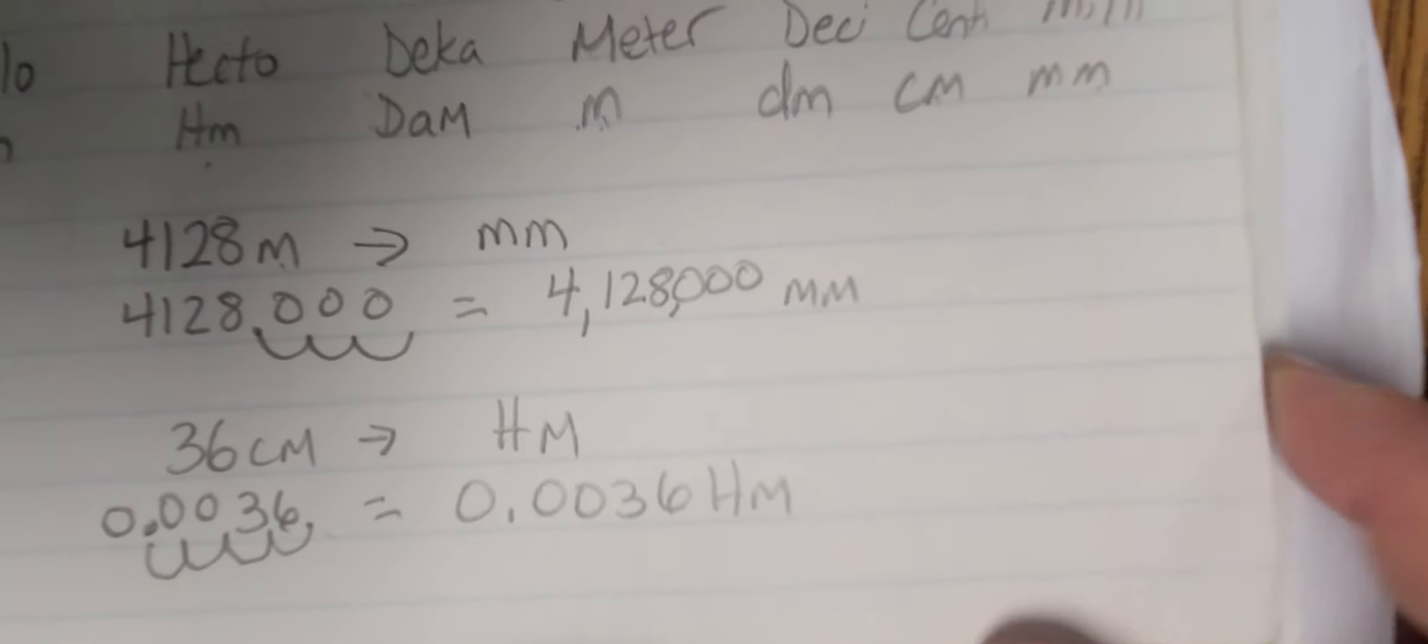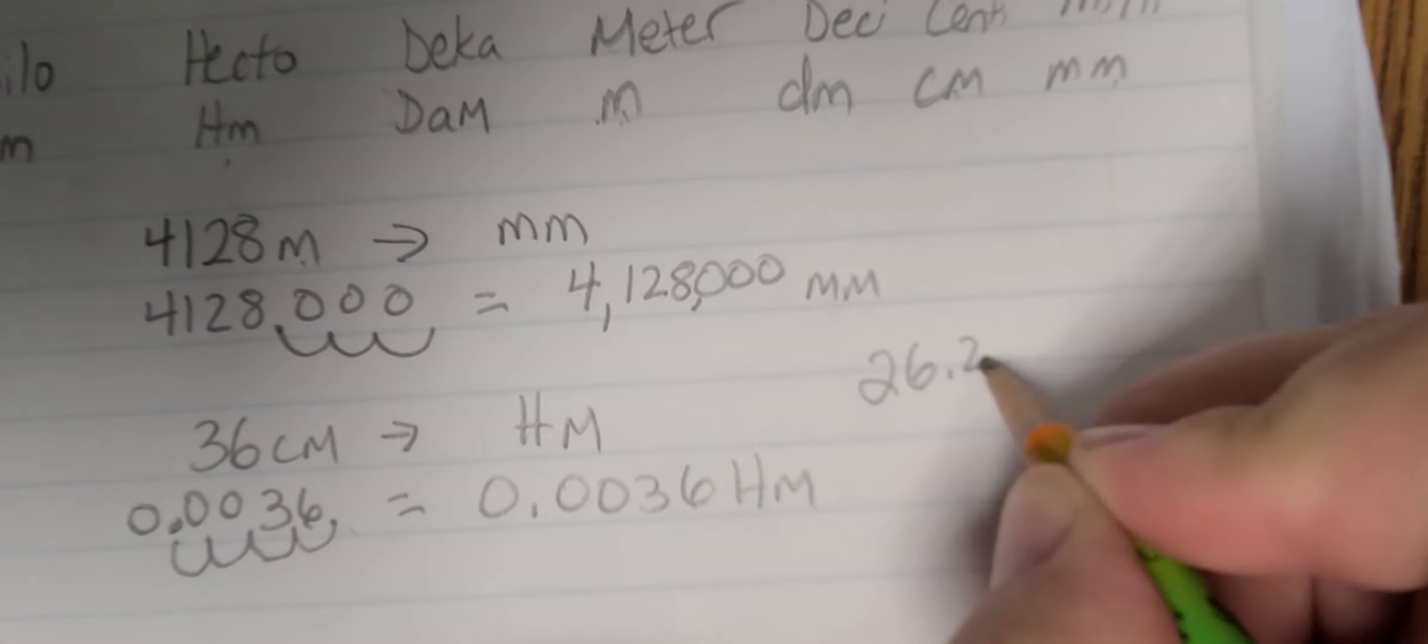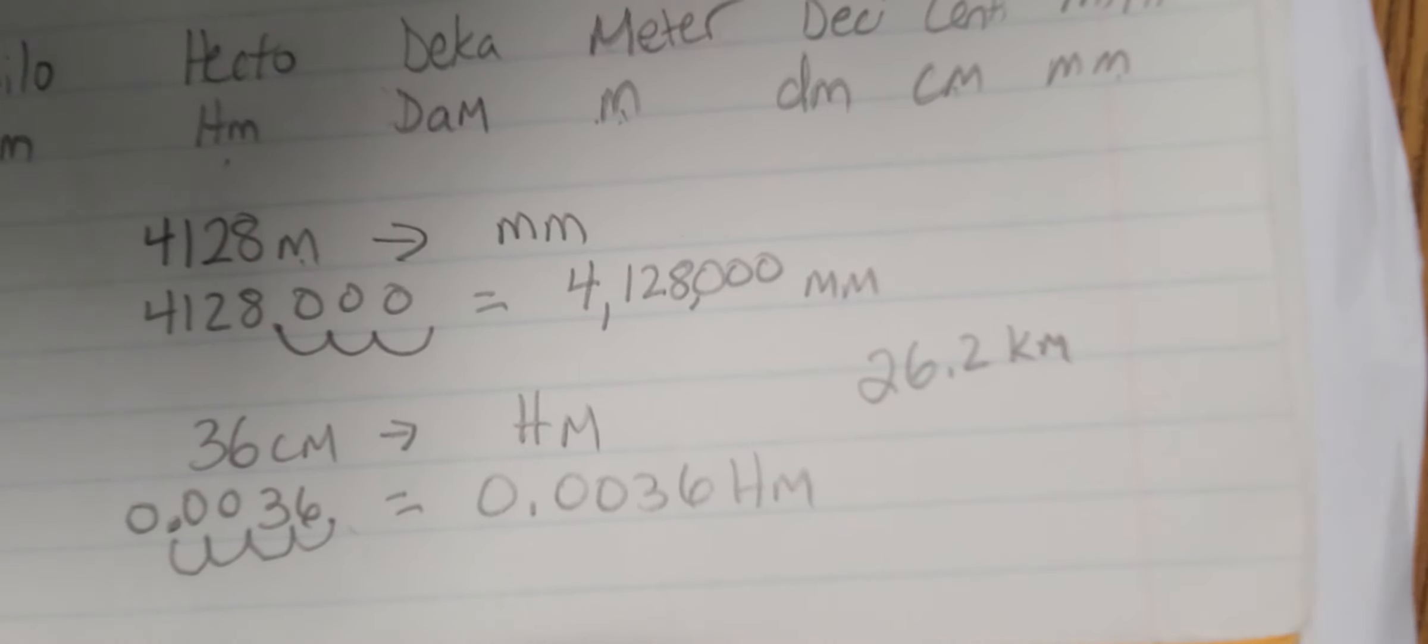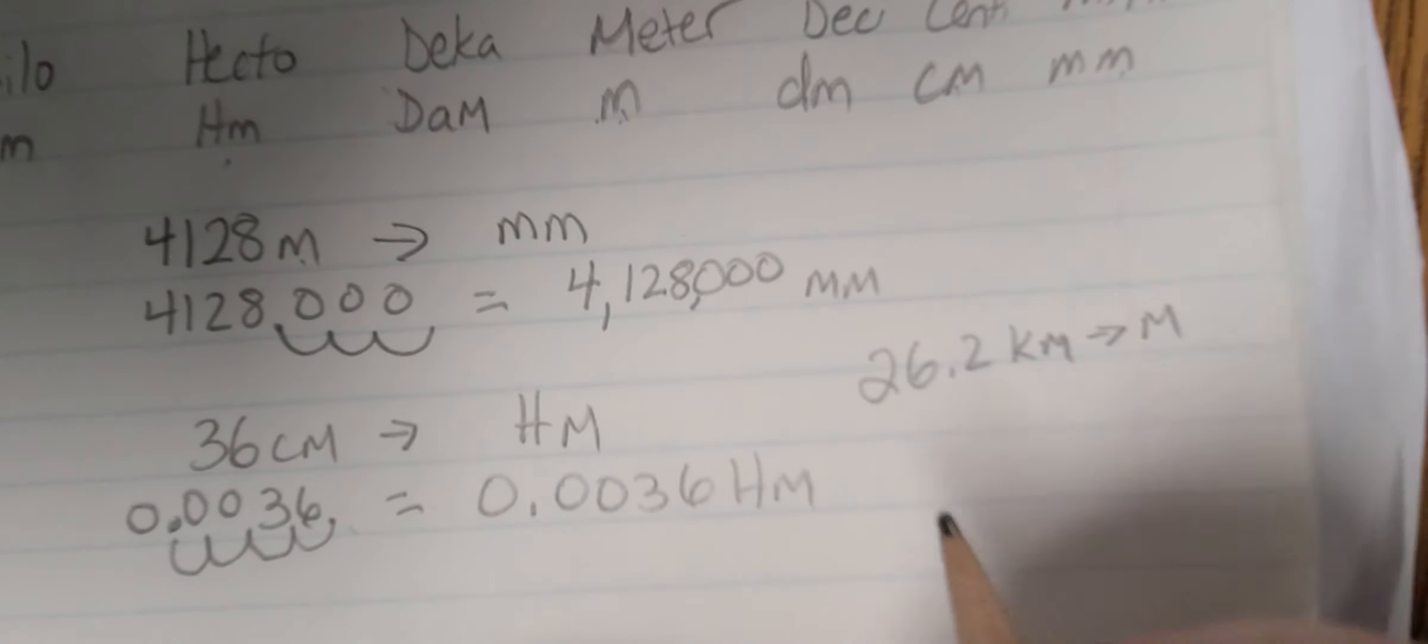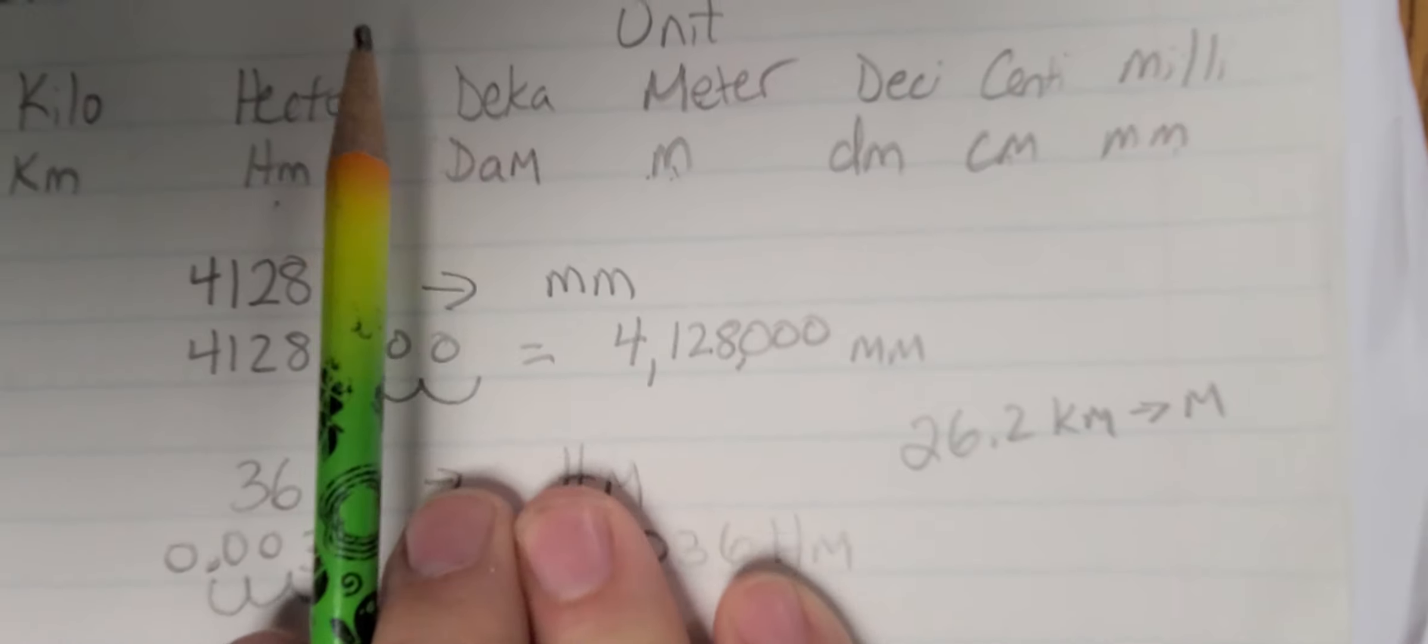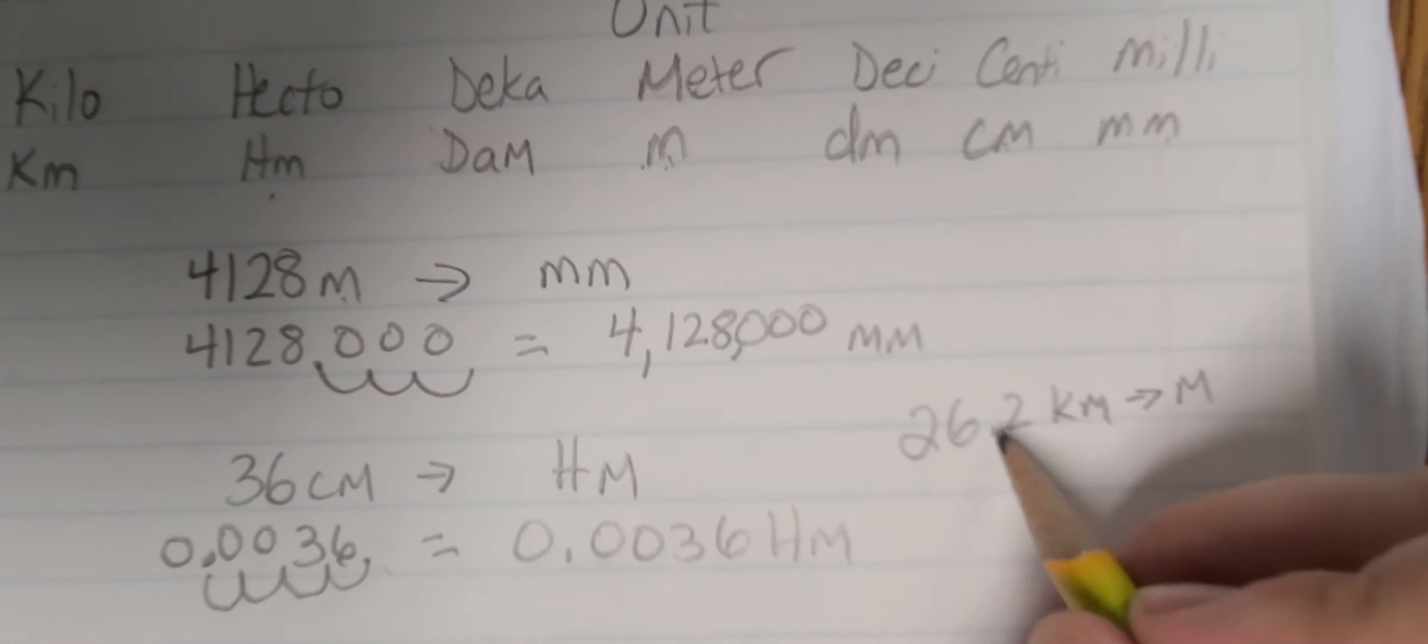Alright, one more example. I'll do it really quick over here. Let's do 26.2 kilometers, and I want to go now to meters. To go from kilo to meter, I go 1, 2, 3 over.